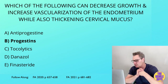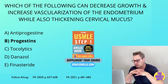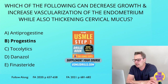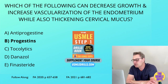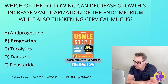Anti-androgens include abiraterone, flutamide, ketoconazole, and spironolactone. Abiraterone is a 17-alpha hydroxylase inhibitor used in prostate cancer. Flutamide is also used in prostate cancer and is a non-steroidal competitive inhibitor at the androgen receptors, decreasing steroid binding. Ketoconazole is another prostate cancer drug that also works as a 17-alpha hydroxylase inhibitor. Spironolactone is used in PCOS and works as both an androgen receptor inhibitor and a 17-alpha hydroxylase inhibitor.